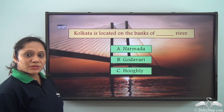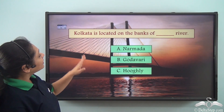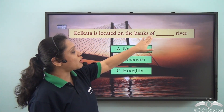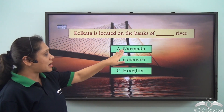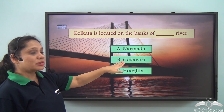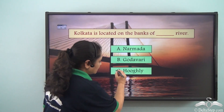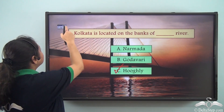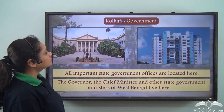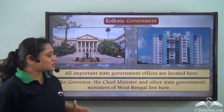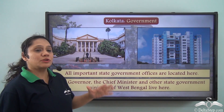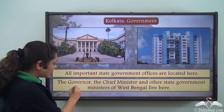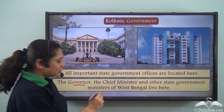Let us quickly do a fill-in-the-blank: Kolkata is located on the banks of the ___ River. The options are Narmada, Godavari, or Hooghly. The correct answer is Hooghly.